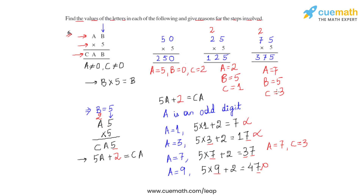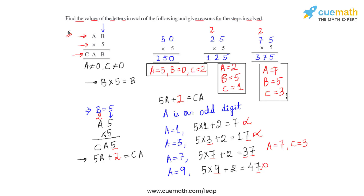These are the different sets of values we have found. In the first case, b equals zero, a equals five, and c equals two. In the second case, b equals five, a equals two, and c equals one. In the third case, also with b equals five, a equals seven and c equals three. These are all the valid solutions for this particular question.